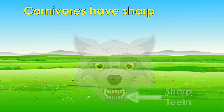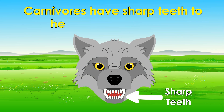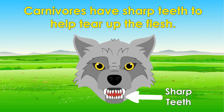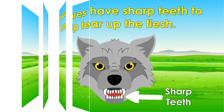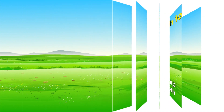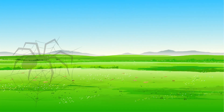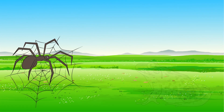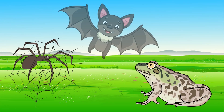Carnivorous animals have sharp teeth to help tear up the flesh. Spider, frog, and bat are small carnivorous animals.